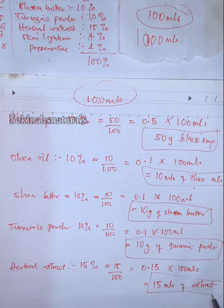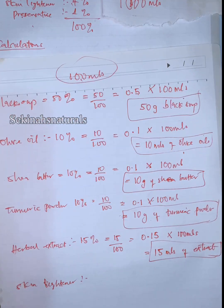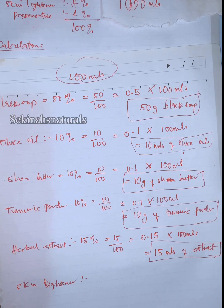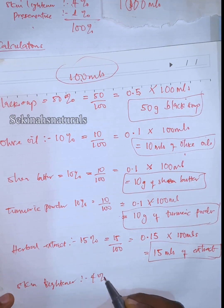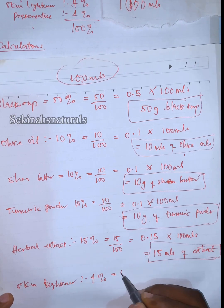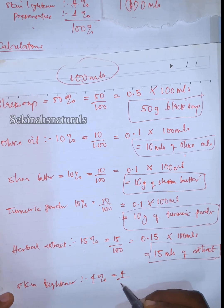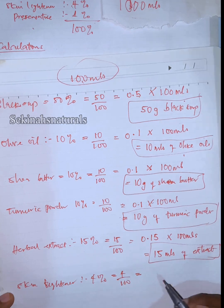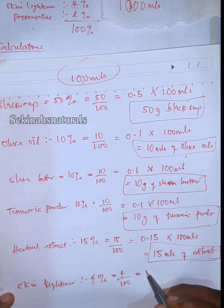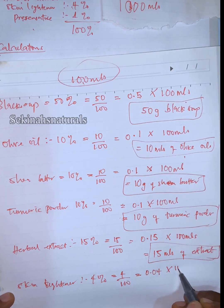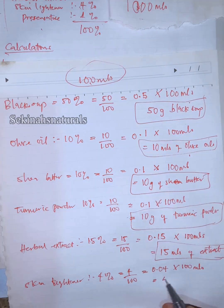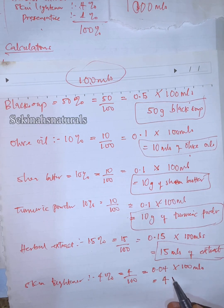For the skin lightener, the recipe calls for 4%. That is 4 over 100, which is 0.04, times 100, giving us 4 mils of skin lightener.